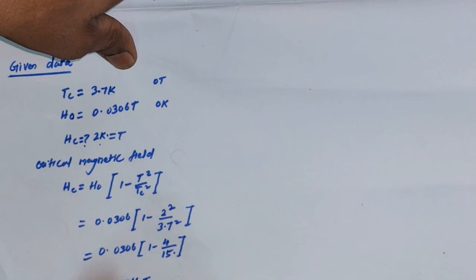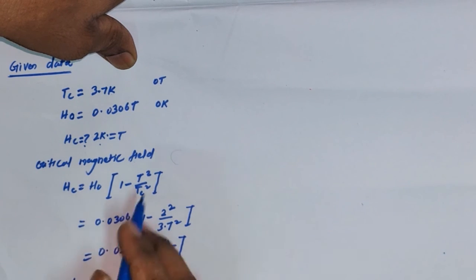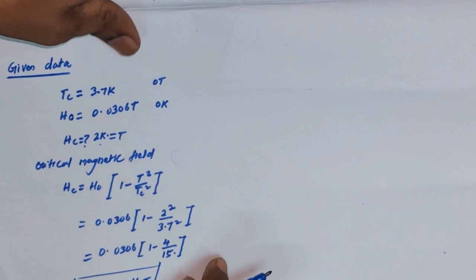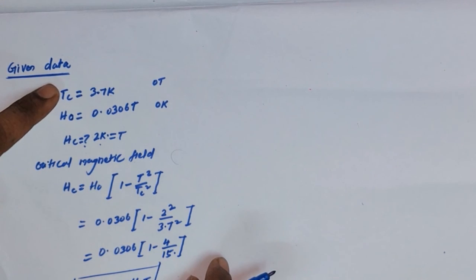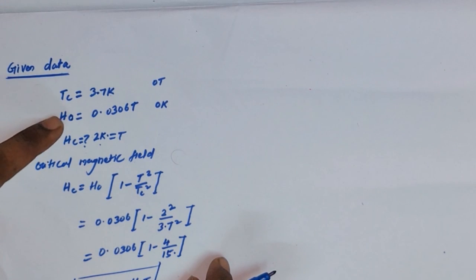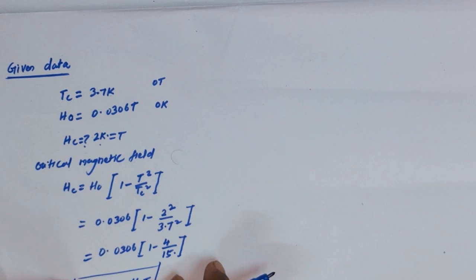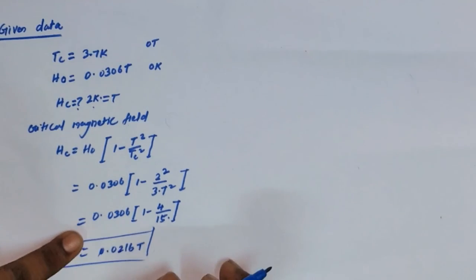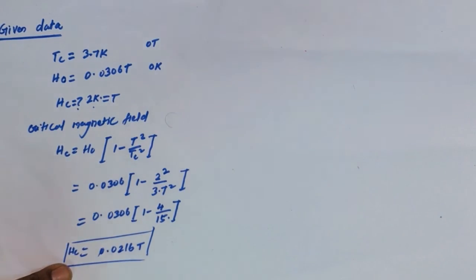This is the critical magnetic field at T equal to 2 kelvin: 0.0216 tesla. As the temperature changes, the critical field also changes — in this case the critical field is decreasing. That is the key understanding from this problem.